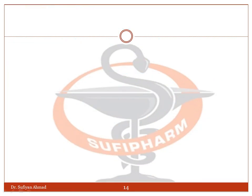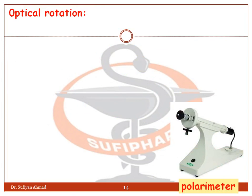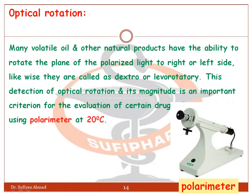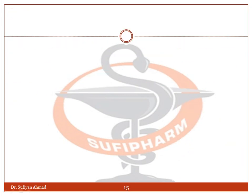Optical rotation: many volatile oils and other natural products have the ability to rotate plane-polarized light to the right or left side; accordingly they are called dextrorotatory or levorotatory. Detection of optical rotation and its magnitude is an important criterion for the evaluation of certain drugs. It is studied using a polarimeter at 20°C.